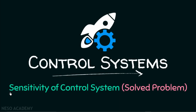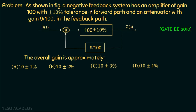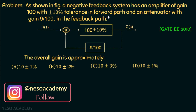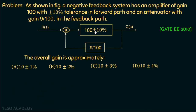In this presentation we are going to discuss one problem based on sensitivity of a control system. As shown in the figure, a negative feedback system has an amplifier of gain 100 with plus/minus 10% tolerance in the forward path and an attenuator with gain 9/100 in the feedback path. The input is R(s), the output is C(s), and we need to find the overall gain. This is a multiple choice question asked in GATE Electrical 2010.